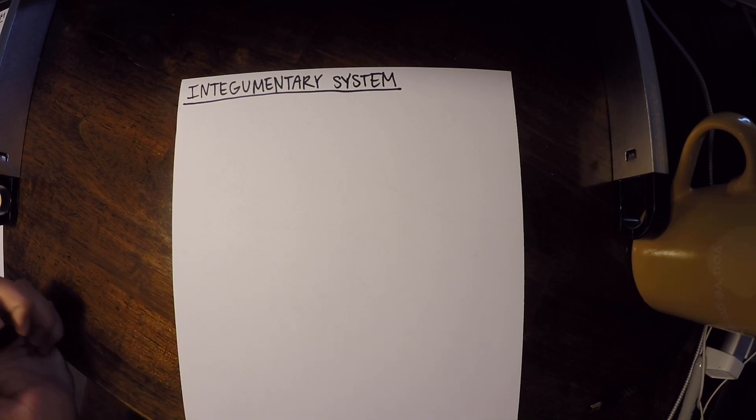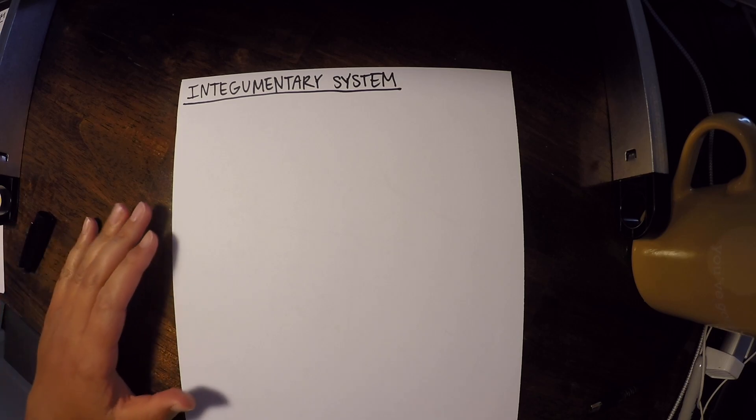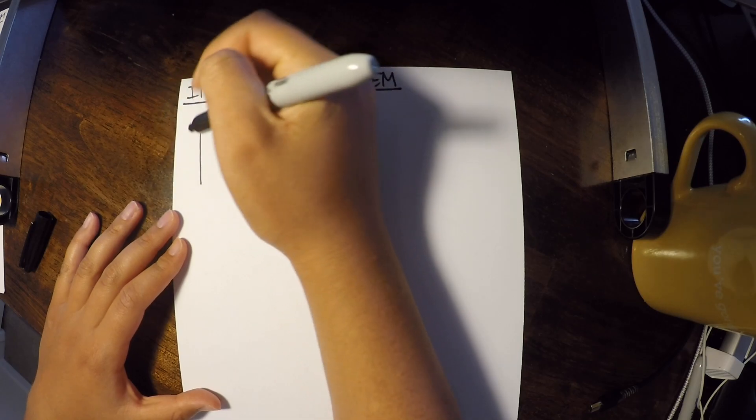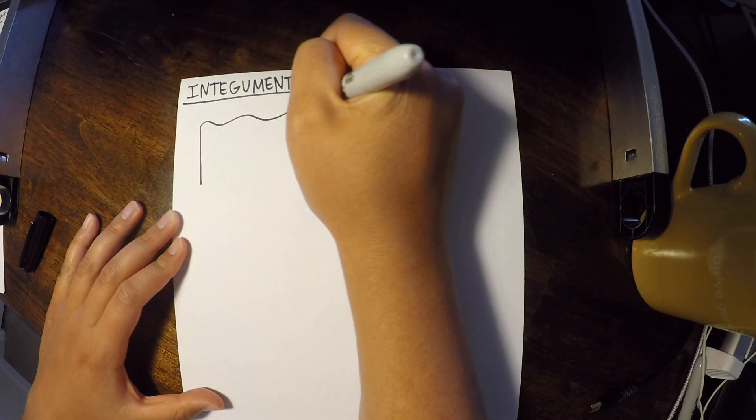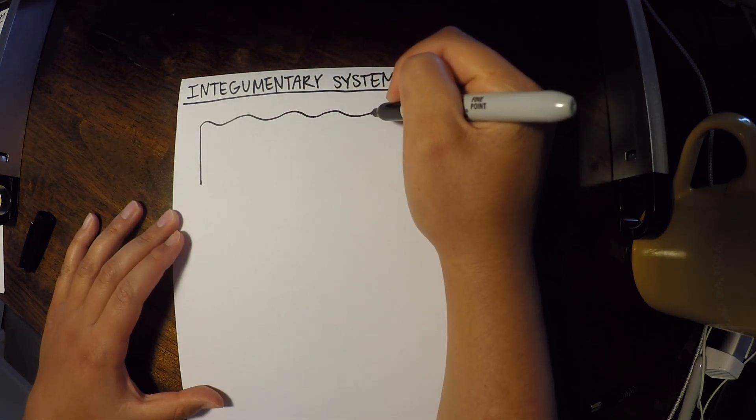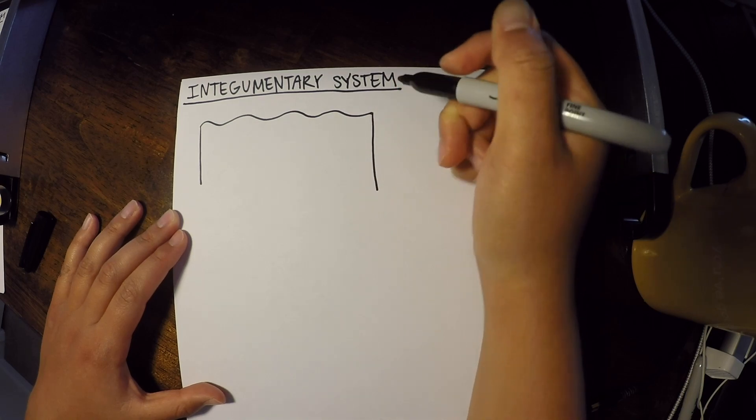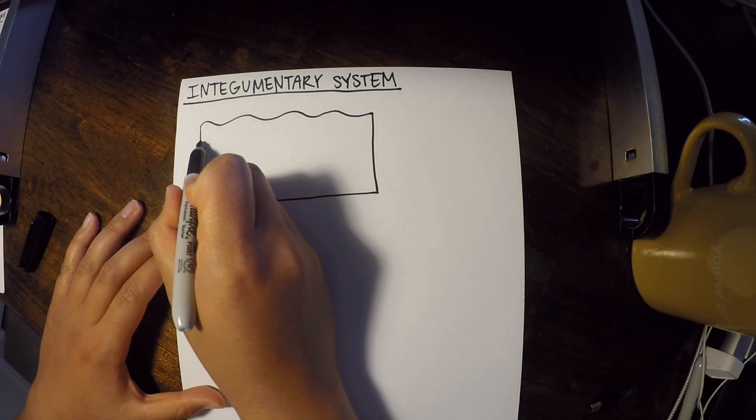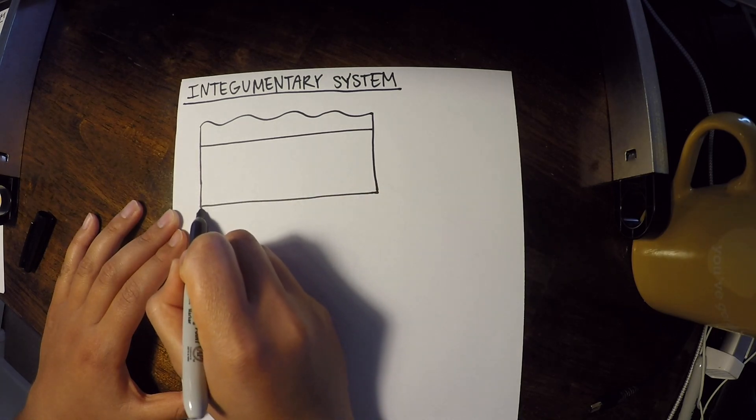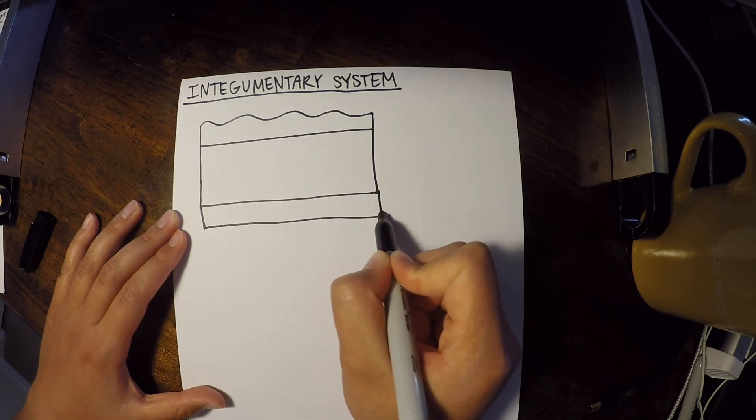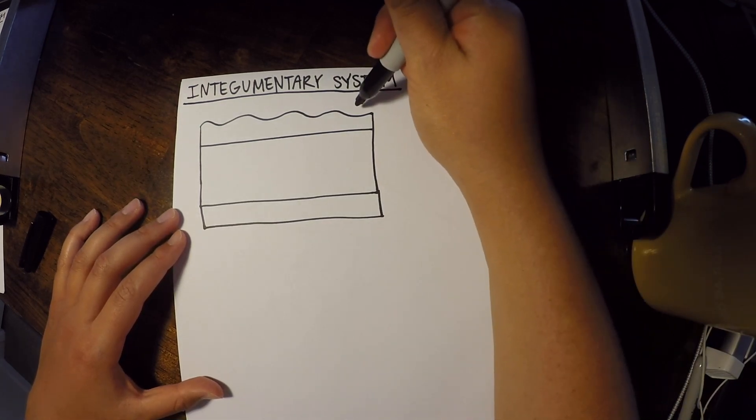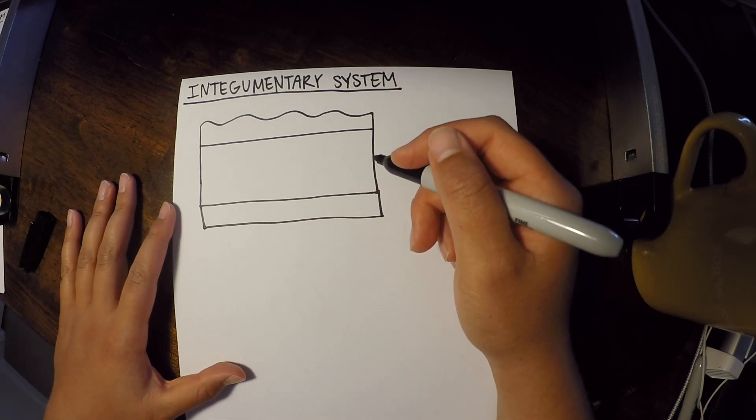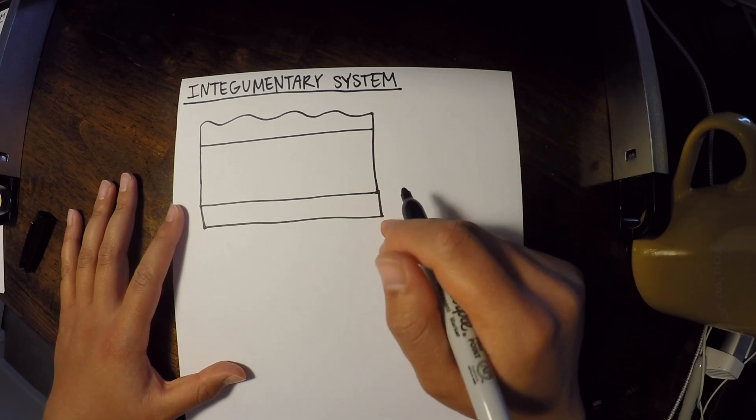Now, what I'm going to start with is drawing a picture of just a piece of the skin. So this is going to be like a chunk of skin that we've taken out. So this is a cross-section, and this is superior, this is inferior, and we're looking at just a chunk of skin taken out. This is superficial, and this is deep down here.